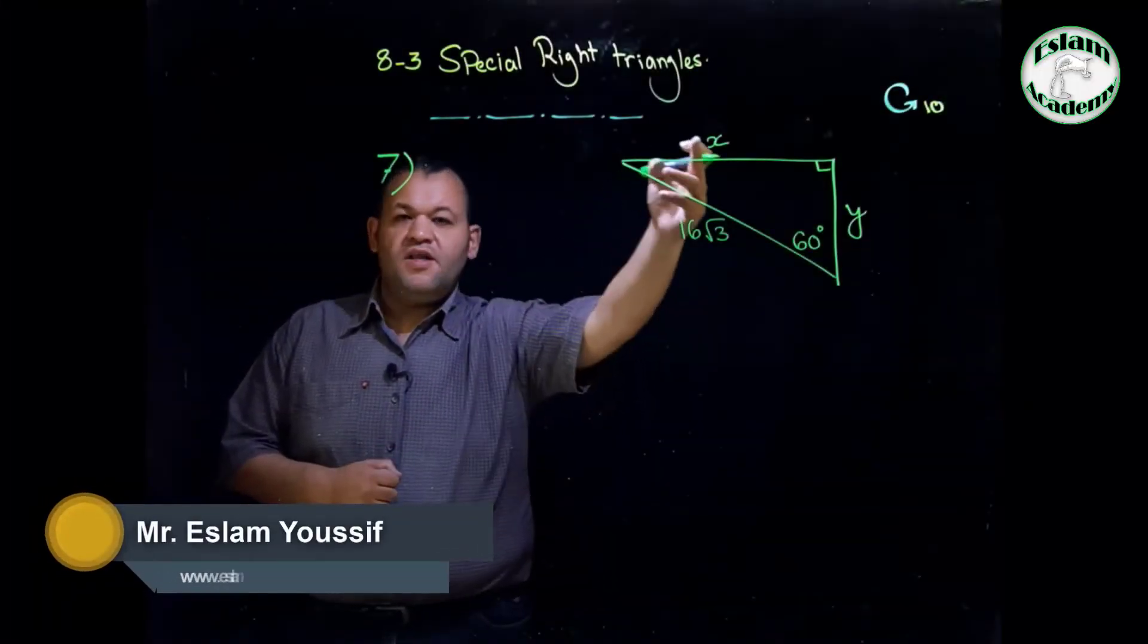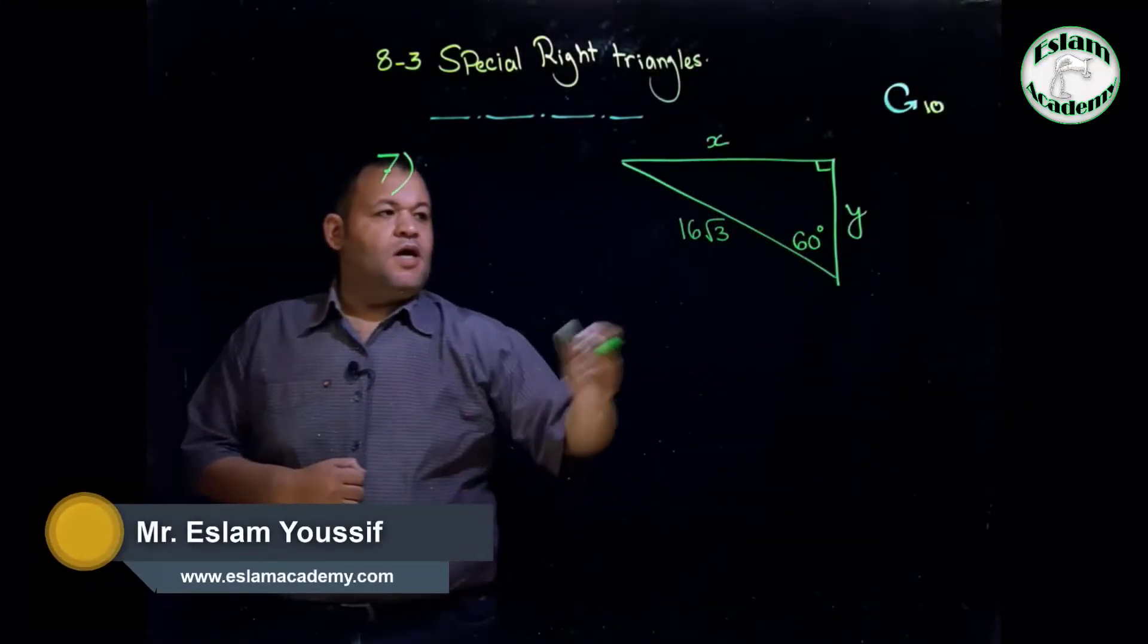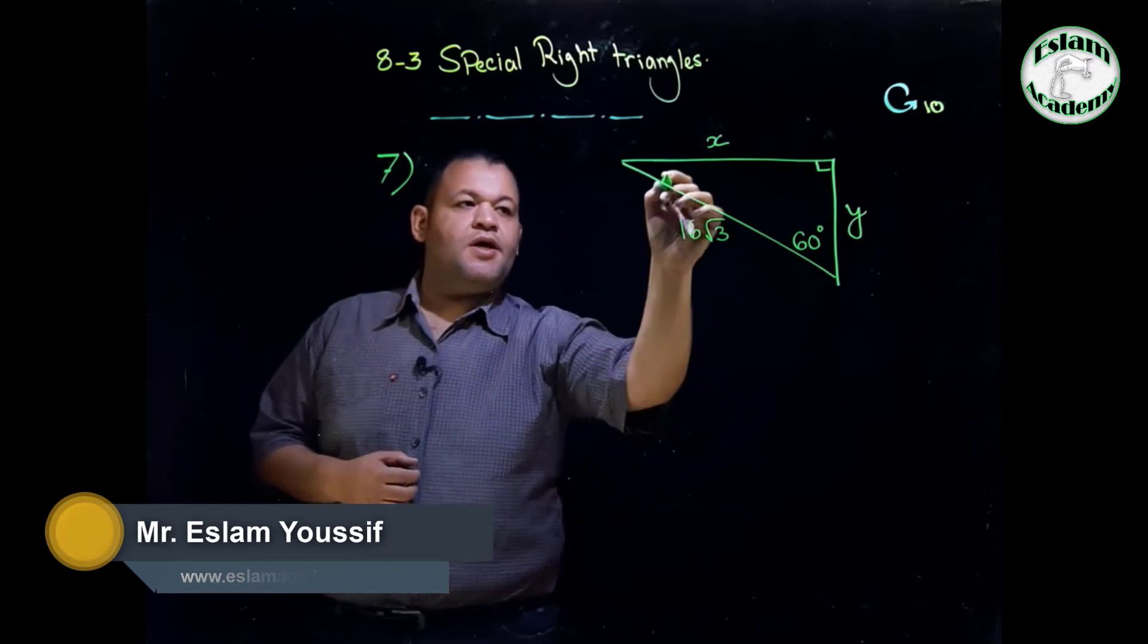Question number seven. We need to find the value of x and y. As we said before, we have a 30-60 triangle.